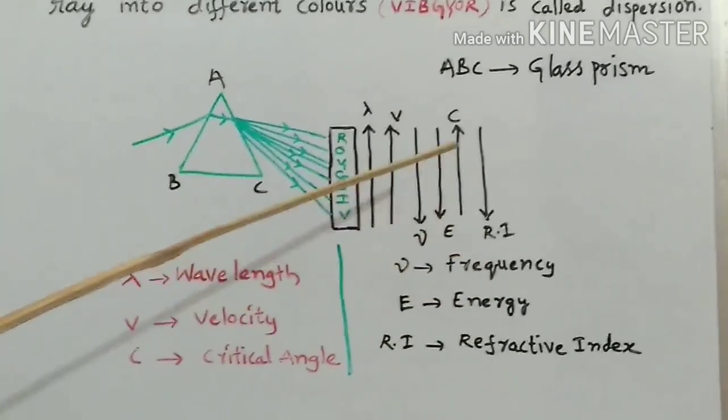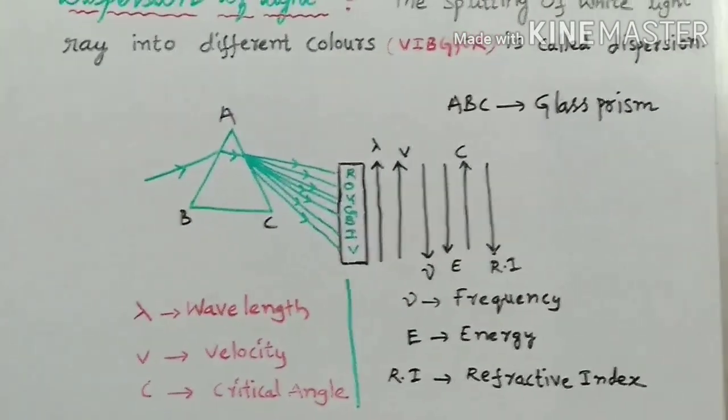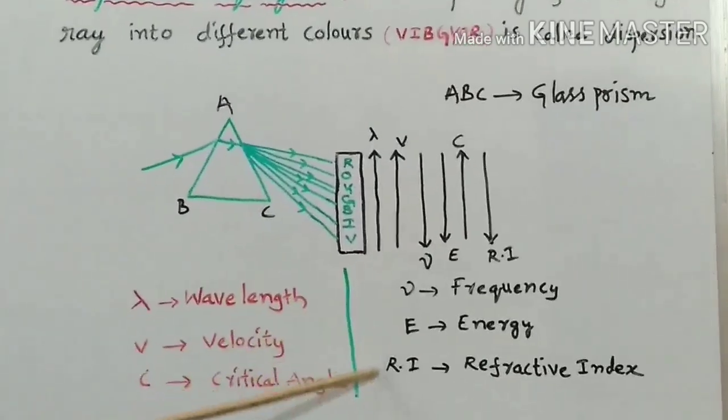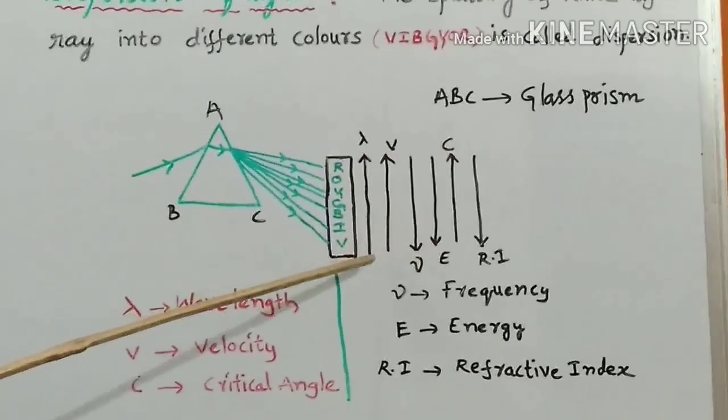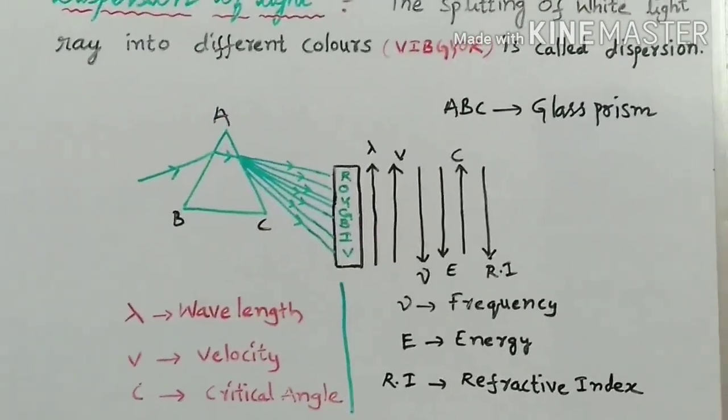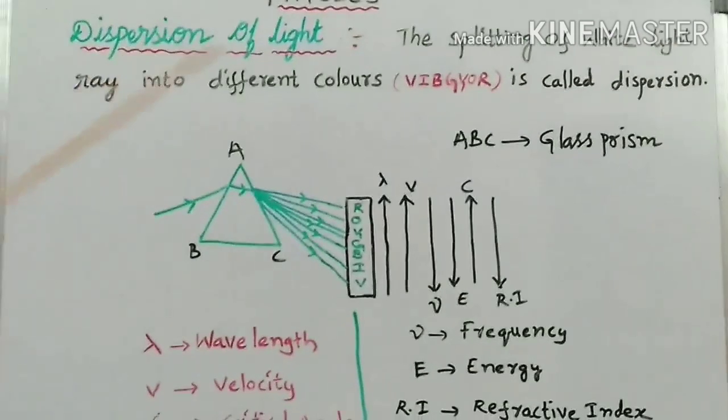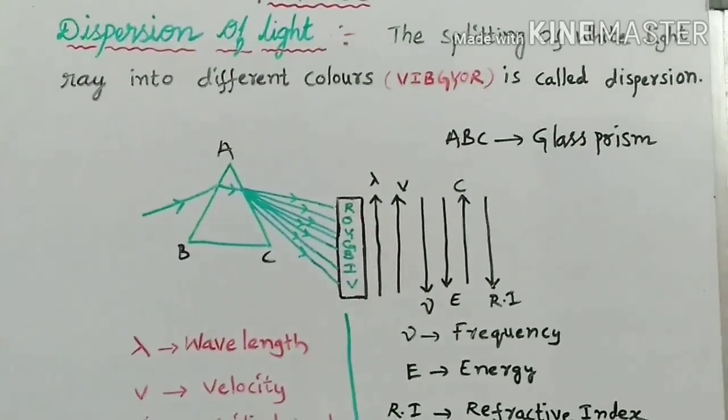Here, these three are decreasing order from red to violet. These three are increasing from violet to red. This is an important diagram for competitive exam. Thank you.